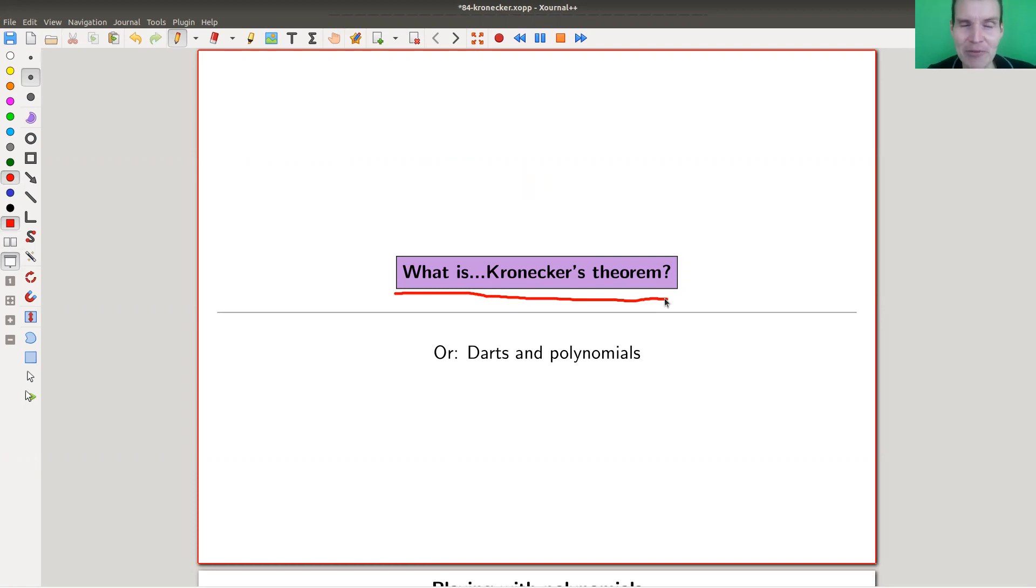So Kronecker was a really productive mathematician, very impressive. This one is about polynomials, so algebraic integers, and it's kind of a game of darts with polynomials. We'll see what I mean. It's a game of darts in my illustrations, of course. I leave it to you to decide whether it's really a game of darts or not.